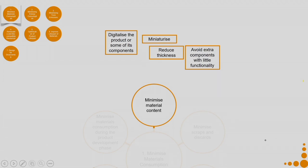You can reduce the thickness but build in strength by adding ribs. Avoid extra components with little functionality. Avoid oversize dimensions — bigger means more material, so try to find the most optimal size. However, when reducing the size, take into consideration how the product will be used. If a product is too tiny to hold in your hand, it becomes very difficult to use. Under those considerations, try to avoid oversized dimensions.